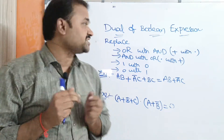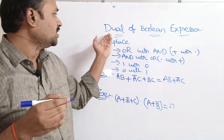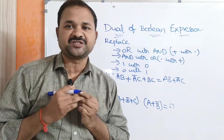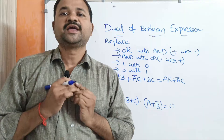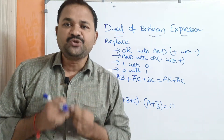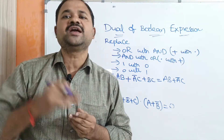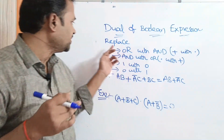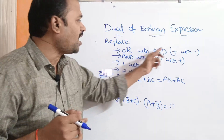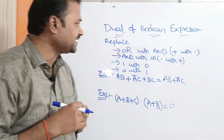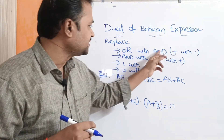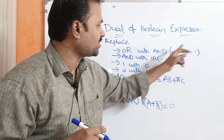Now, let us discuss the dual of a Boolean expression. In order to find the dual of a Boolean expression, we have to replace OR with AND. OR means plus, AND means dot.